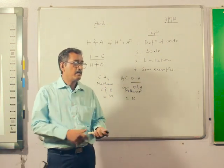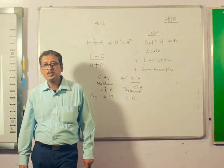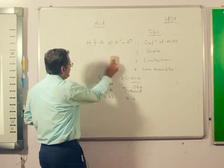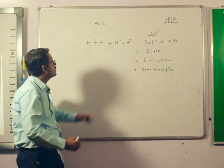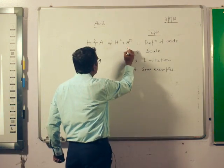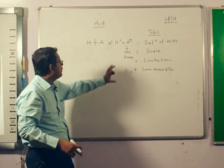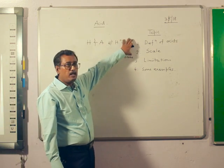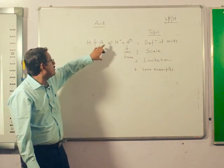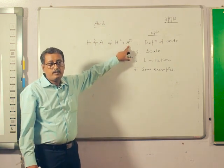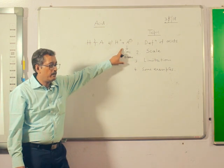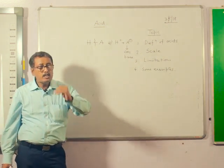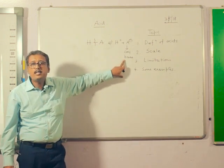The third factor is stabilizing the conjugate base compared with HA. Whenever we are considering an acid HA, after giving up the proton it is converted into the conjugate base A⁻. If A⁻ is very stable, HA will automatically donate its proton and convert it to A⁻, meaning H⁺ will be liberated. So we have to consider the stabilizing factor of the conjugate base. Among all these factors, the stability of the conjugate base is the most important one.